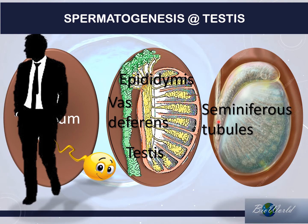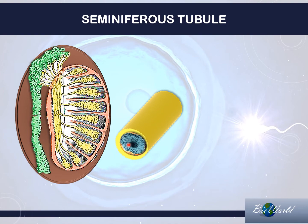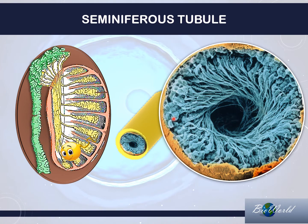So now let's move on to the seminiferous tubules. Let us isolate one of the seminiferous tubules and have a look at the cross section. You find that the wall of the seminiferous tubules is lined by many layers of cells, which end with something that looks fibrous at the center — these are actually the sperm cells. Once the sperm cells are produced through the process of spermatogenesis, the sperms will swim through this hollow space to connect at the epididymis, after which they will swim out through the vas deferens out of the body of the male.